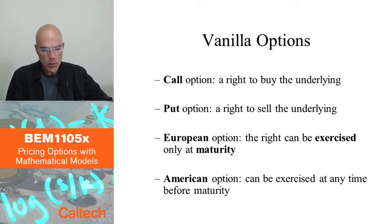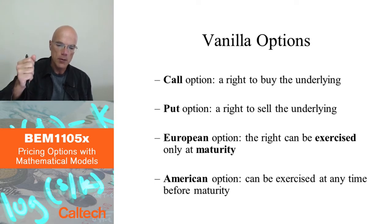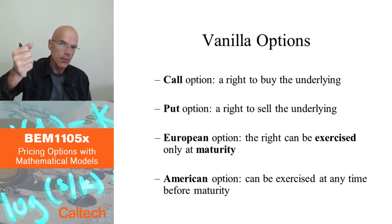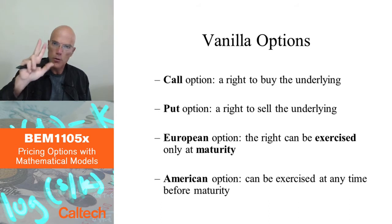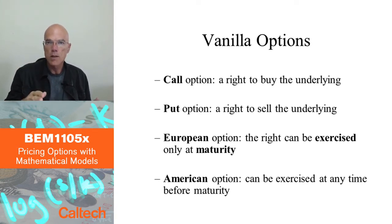You can also divide options into so-called European options and American options. European options are options which can be exercised only at maturity. So if I sell you a call option on, say, Google stock with a maturity of three months from now for $400, that means three months from now you can decide to buy from me Google stock for $400, but you don't have to. With the European option, you can do that only at that specific date. With American options, you can do that any time between today when we start the contract and the maturity at the end of the life of the option.